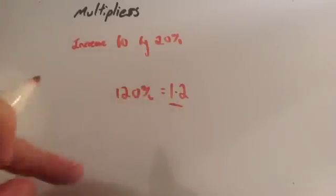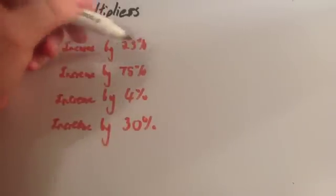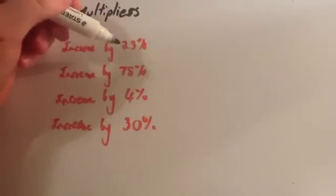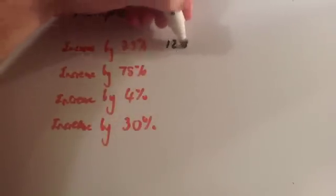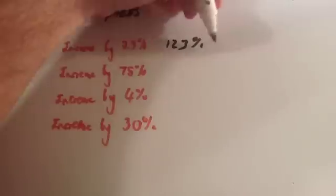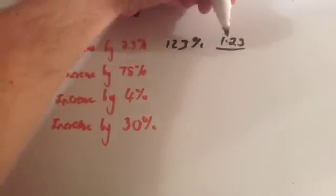Let's look at some other increases and what their multipliers are now. Let's pretend we wanted to increase the number by 23%. To increase it by 23%, you start off with 100 and then you add on 23, so that would be 123%. But 123% as a decimal number is 1.23. So the multiplier would be 1.23.